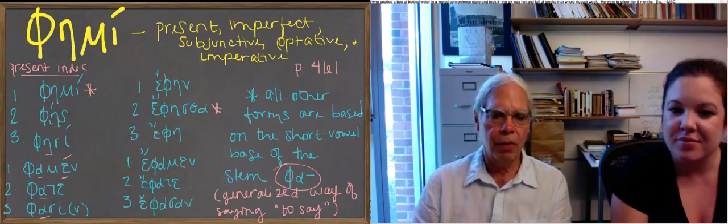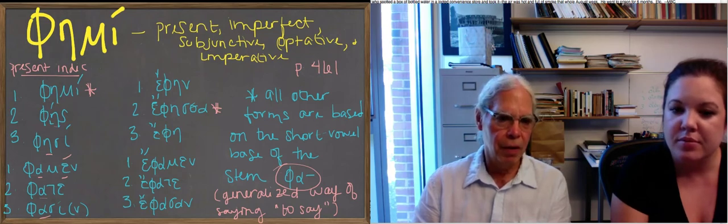Everything else so that the subjunctive is going to be fase, fes, famen, fate, fasi, fosi, rather, so forth.